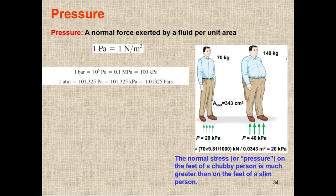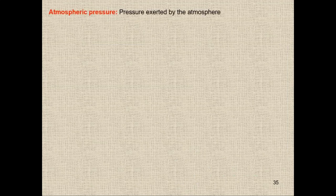1 bar equals 10⁵ Pascal or 100 kPa. 1 atmosphere equals 101,325 Pa, or 1.01325 bar, or 760 Torr, or 760 mmHg. We normally use Pascal, atmosphere, and bar, and sometimes mmHg. Now, when talking about pressure, we have different types of pressure.